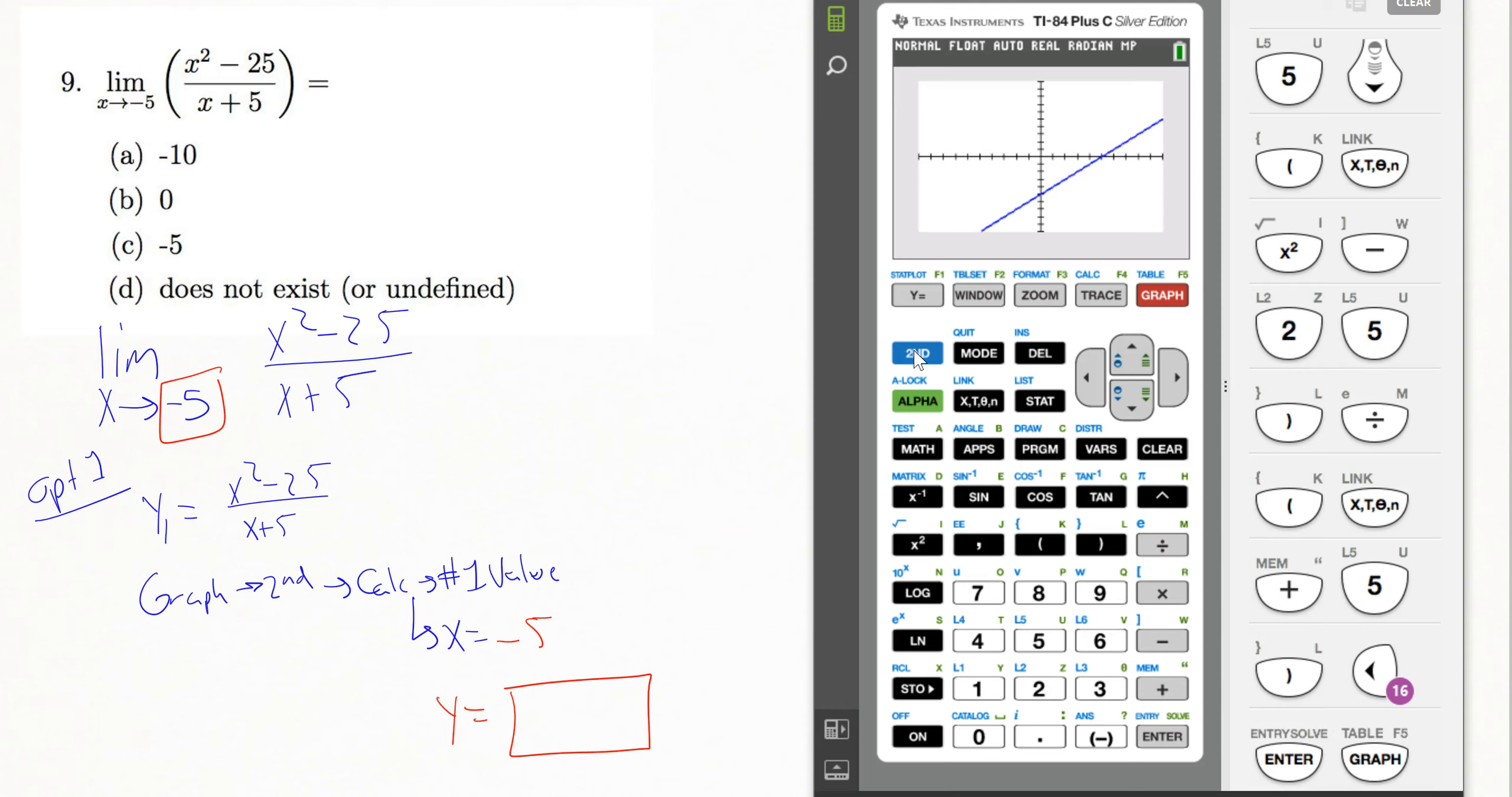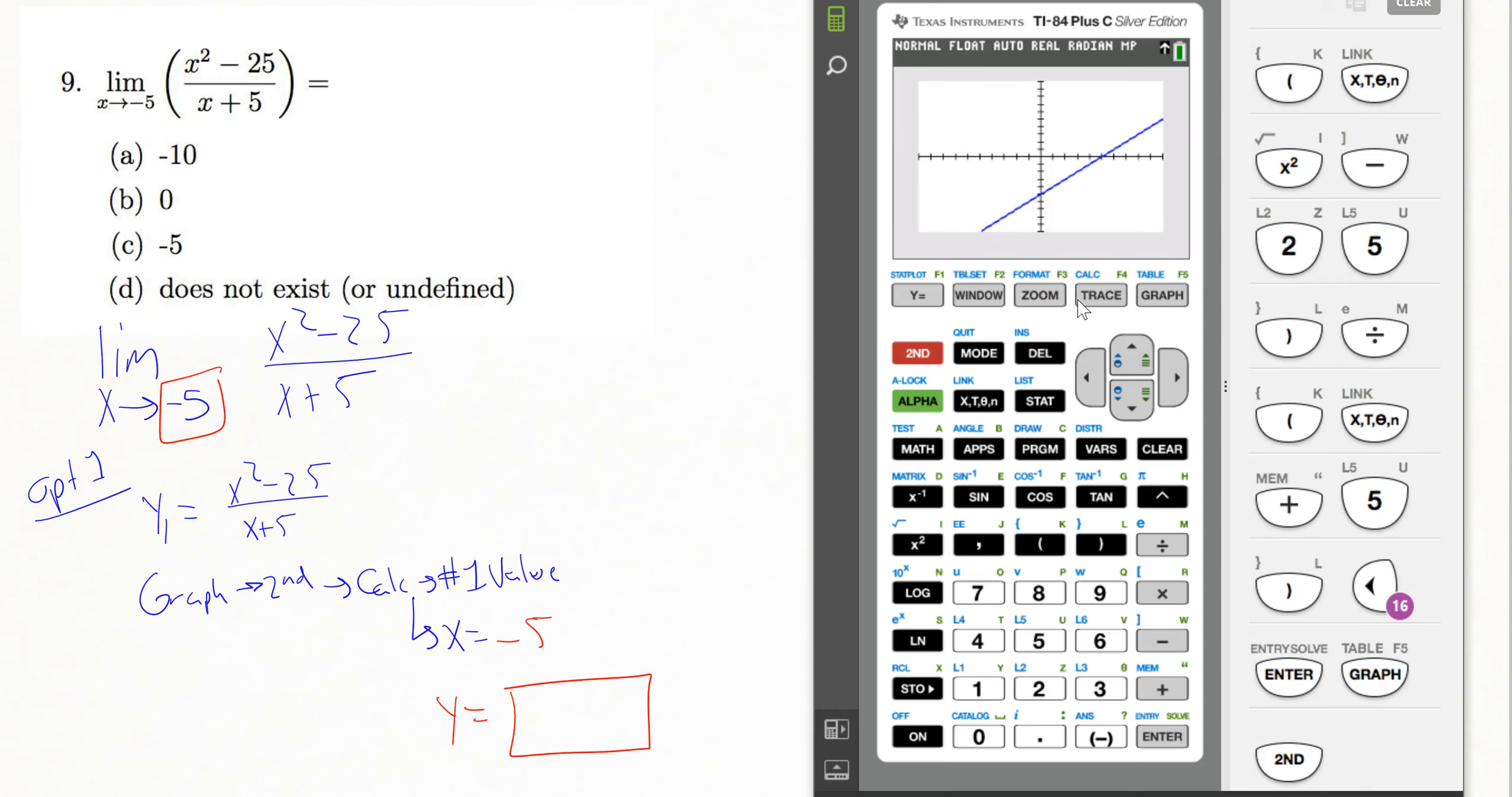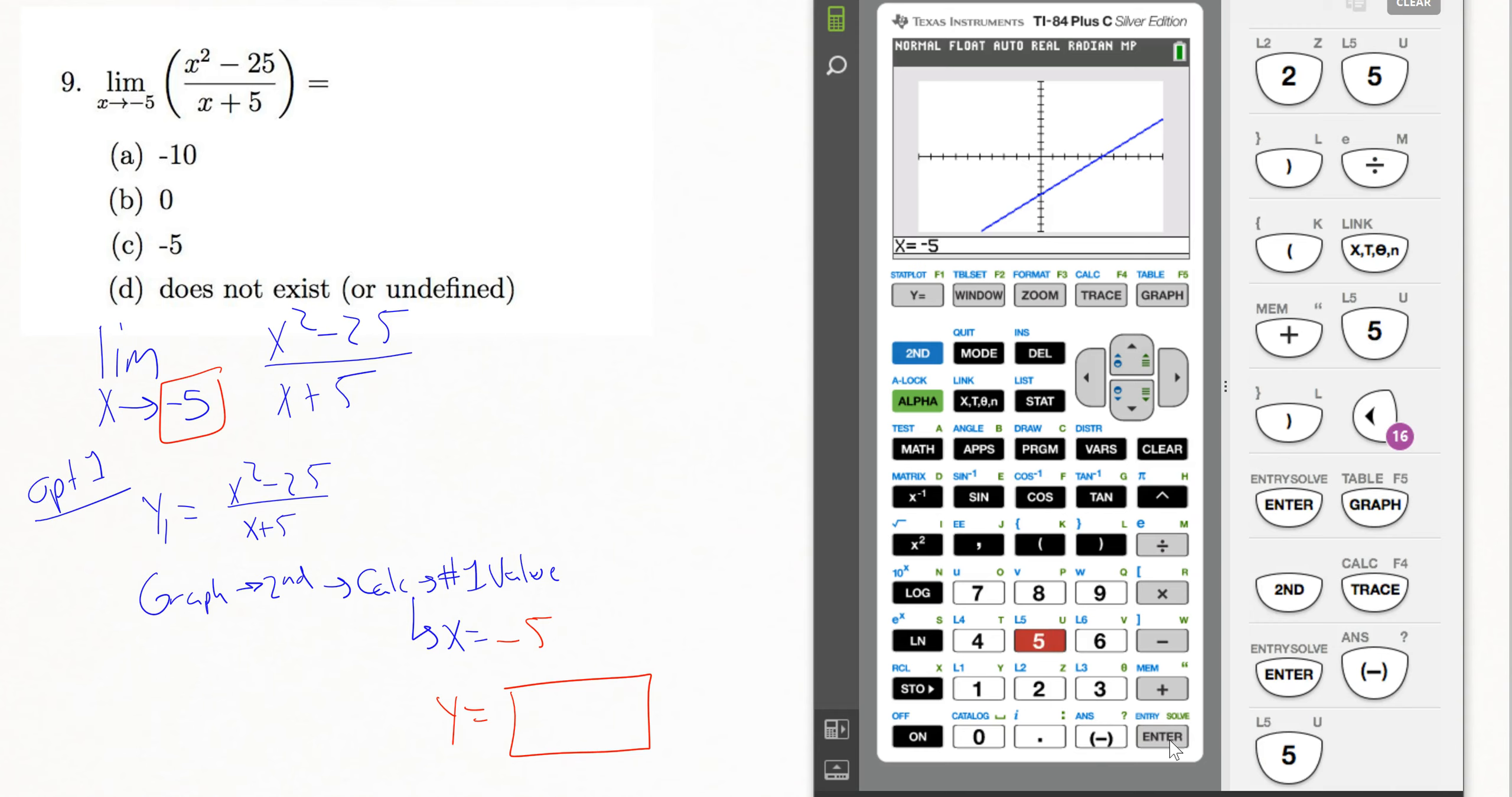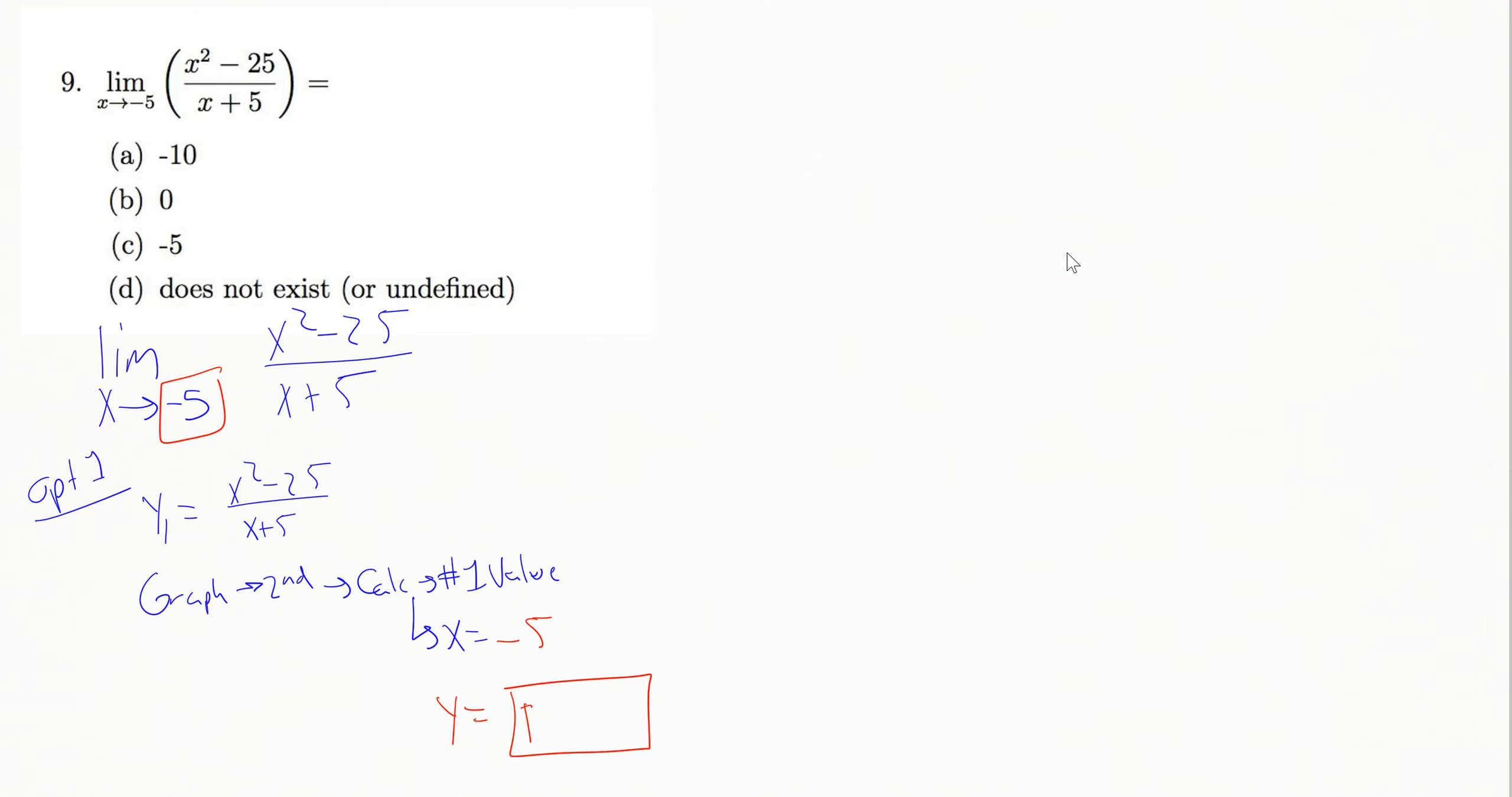So after I graph it, my move is to go second, calc, and then choose number 1 in that menu option, value. I want to know what's happening at negative 5, so I type in negative 5. What we'll see here is I get a y equals blank. So I didn't get a y value out trying option 1 here.